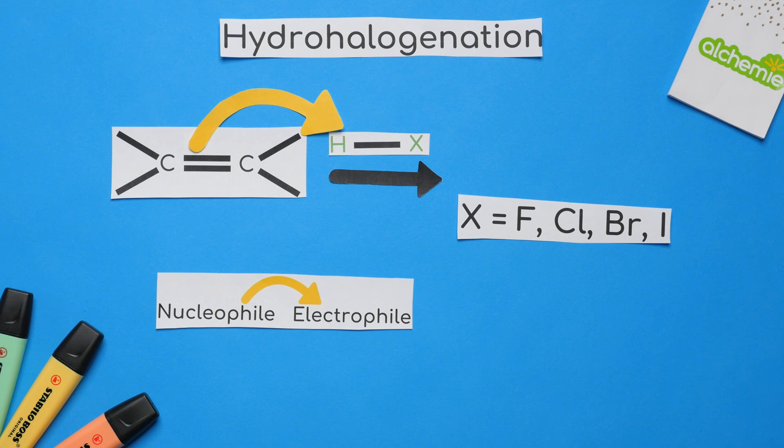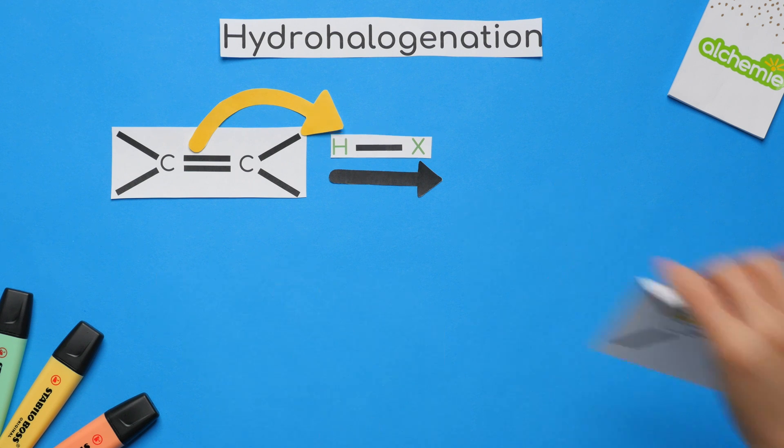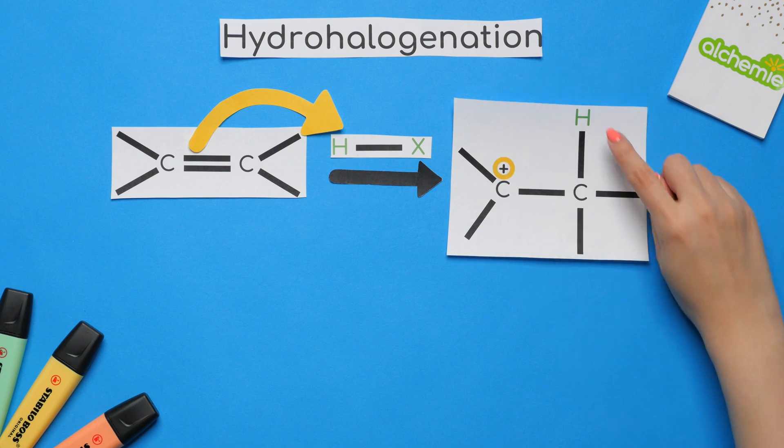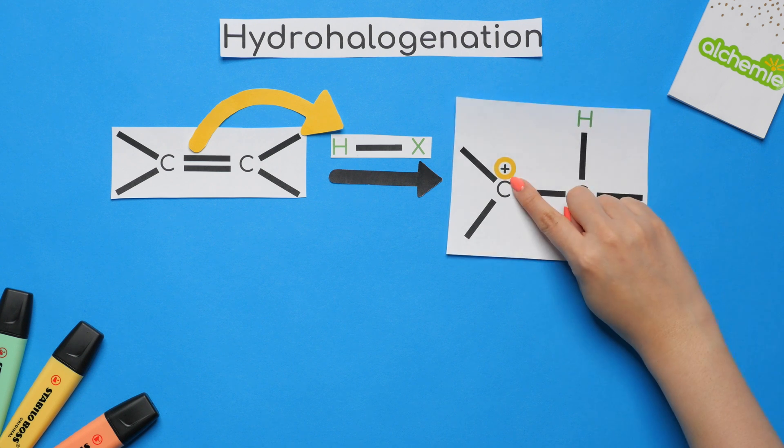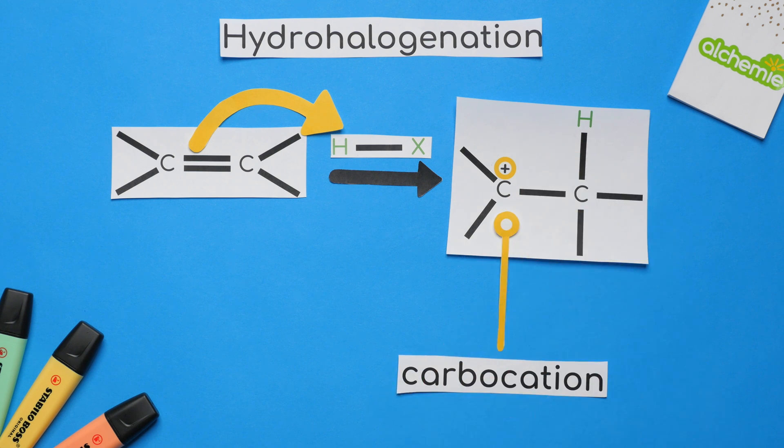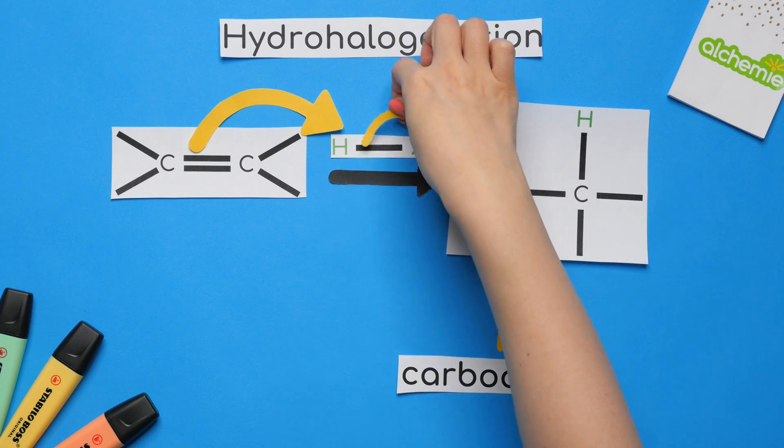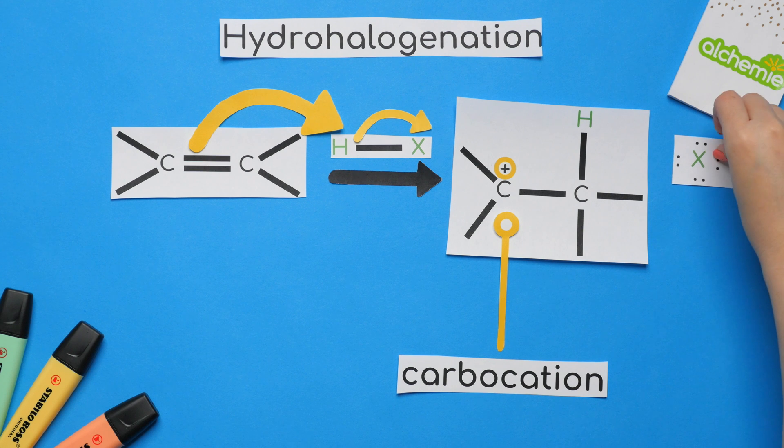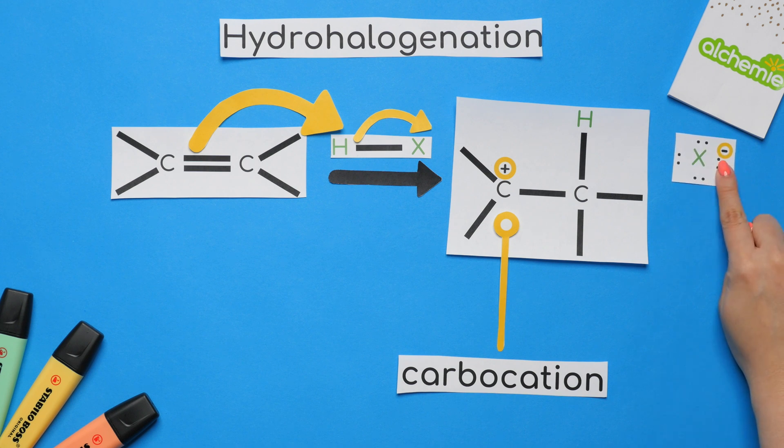Our hydrogen now goes to one of the carbons that was a part of the double bond, and the other carbon is positively charged since we lost electrons. This positively charged carbon is known as a carbocation. Since the hydrogen is taken, the electrons in this bond will now go to the halogen, which results in a negative charge since the halogen just gained electrons.